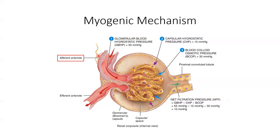Conversely, when arterial blood pressure drops, the smooth muscles in the afferent arteriole walls are stretched less, so they relax and dilate — the opening becomes wider. Renal blood flow increases, raising glomerular blood hydrostatic pressure, increasing net filtration pressure, and then increasing GFR. The myogenic mechanism regulates GFR by adjusting blood flow into the glomerulus, and it works quite quickly, adjusting GFR within seconds after a change in blood pressure.